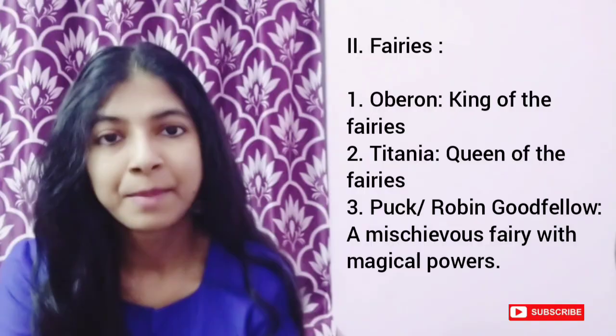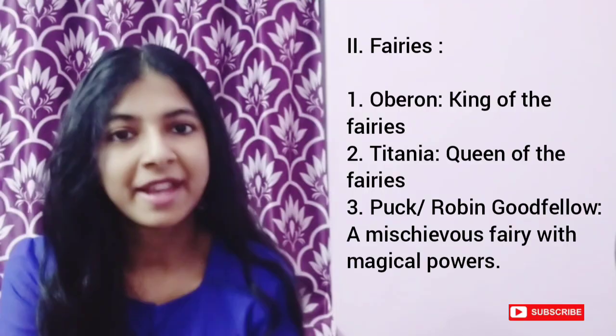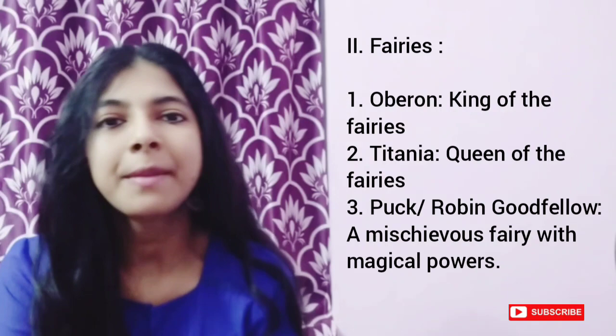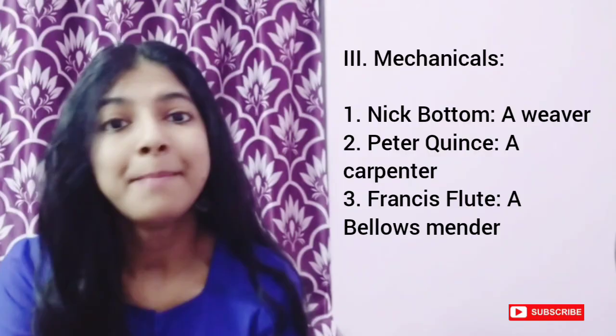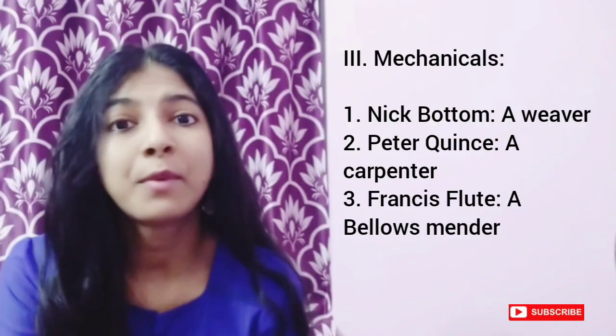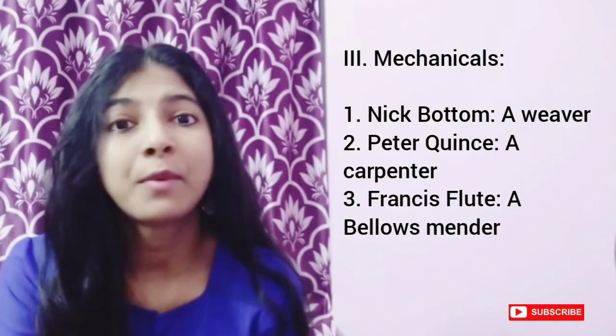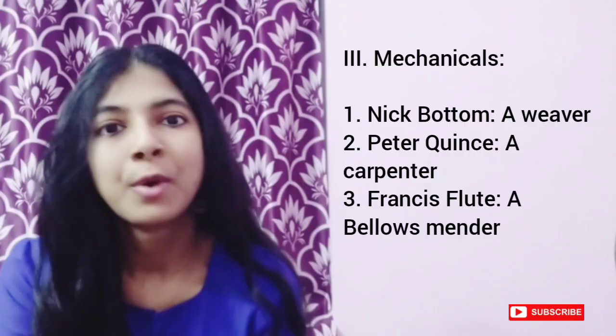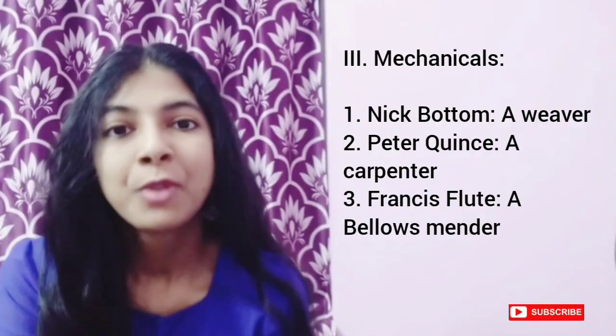We have Helena, who is the best friend of Hermia and is in love with Demetrius. The second category of characters are the fairies who live in the forest. We have Oberon, King of the Fairies; Titania, Queen of the Fairies; and Puck or Robin Goodfellow, who is a mischievous fairy. The third category of characters are the mechanicals or laborers, who are doing rehearsal for a play to perform at Duke Theseus and Hippolyta's wedding. The important characters are Nick Bottom, a weaver; Peter Quince, a carpenter; and Francis Flute, a bellows mender.